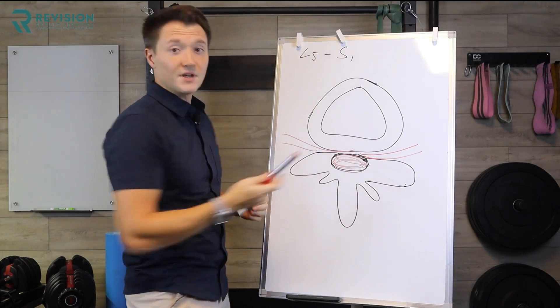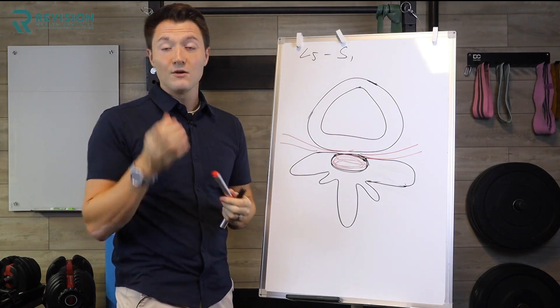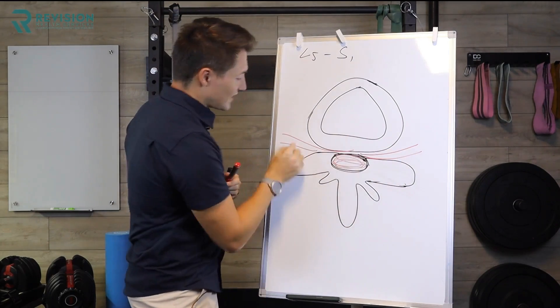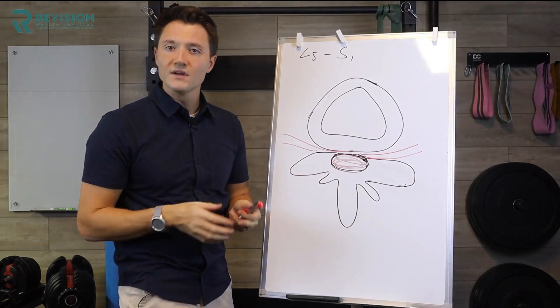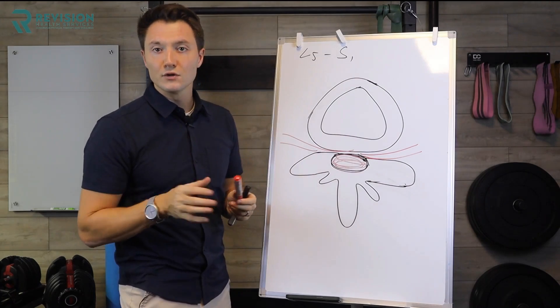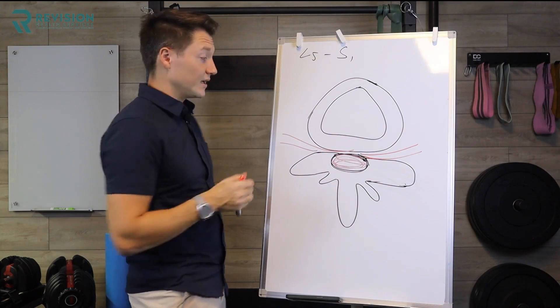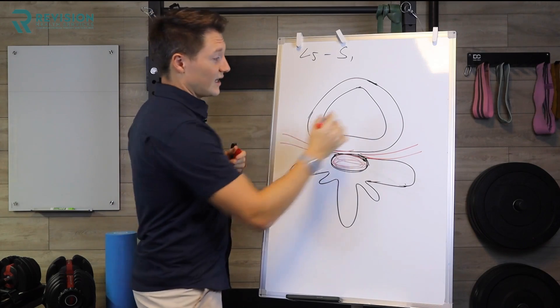And so in the center here is called your central canal, and that houses the spinal cord. And off to the side, we have what's called a nerve root, L5-S1, L4-L5. Those are different nerve roots, and they provide strength and sensation to the leg. That's going to be important to know in just a second.